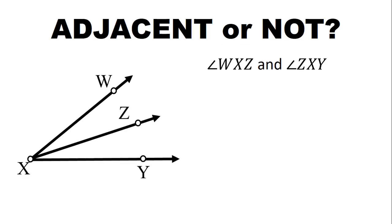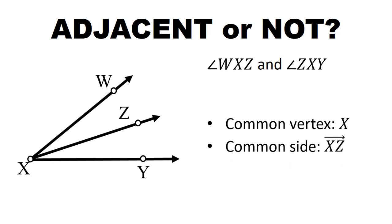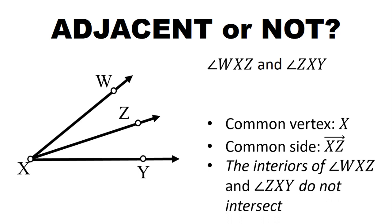Sabihin natin kung ang mga sumusunod ay adjacent angle o hindi. O dito, angle WXZ and angle ZXY. So anong common vertex nila? Ang common vertex nila ay X. Common side, that is RayXZ. How about the interior? Nag-intersect ba? So hindi sila nag-intersect. So they are Adjacent Angles.